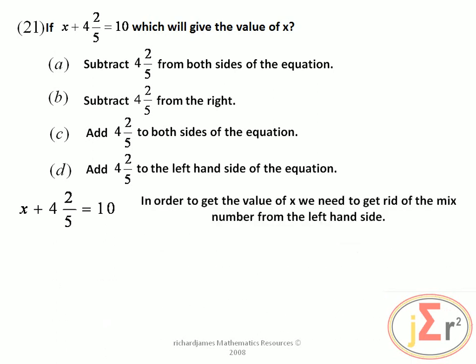In order to get the value of x, we need to get rid of the mixed number from the left hand side. That mixed number 4 and 2 fifths is added to the x on the left hand side, so we need to remove that 4 and 2 fifths. What do we do?